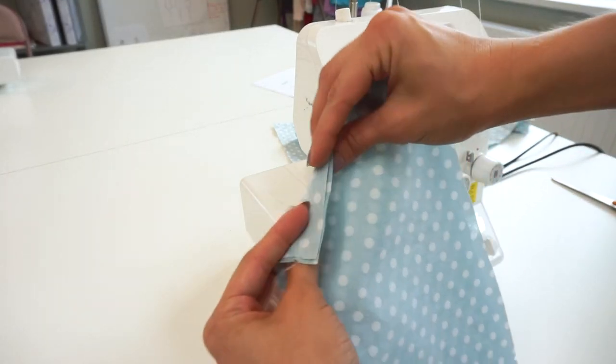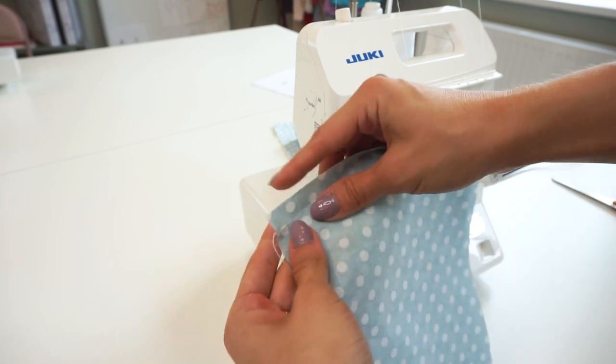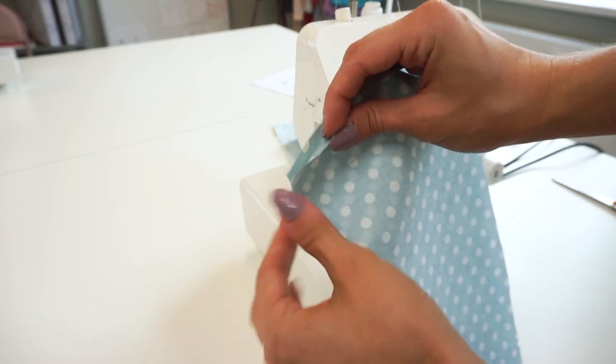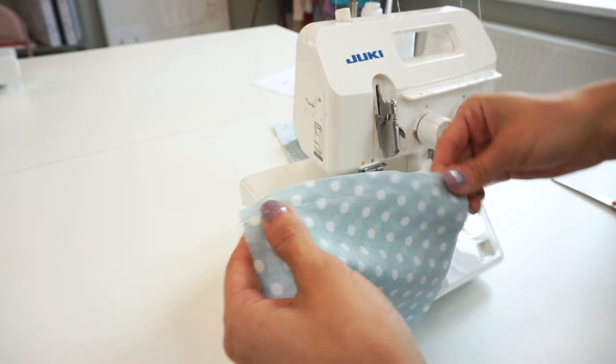Now let's neaten the side seams. If you are using a serger you can neaten both layers together, but if you are using a zigzag stitch I suggest to neaten each layer separately.